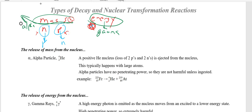One more type of nuclear transformation isn't really radioactive, because nothing's radiating out of the nucleus. What if your nucleus, surrounded by electrons, has one of them come crashing into the nucleus? It doesn't happen that often, but it can happen. That will be our electron capture. And that's going to be our last type.